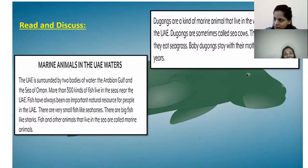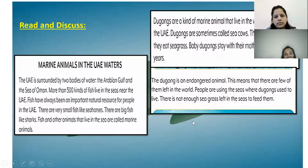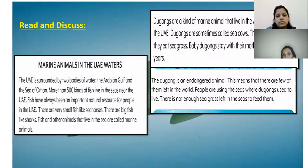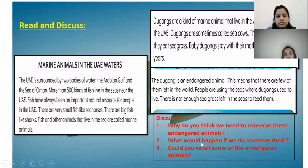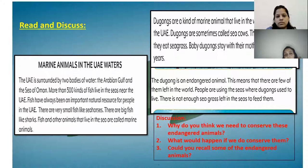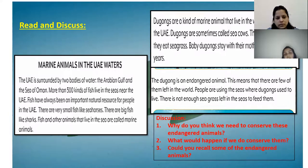Baby dugongs stay with their mothers for two years. Dugongs are endangered — very few remain worldwide. They are hunted because many body parts are used: their skin, bones, teeth, and oil. That is one reason they are endangered. Another reason is insufficient seagrass. Rabia explains this is because humans are building man-made islands and villas, destroying the dugongs' habitat.